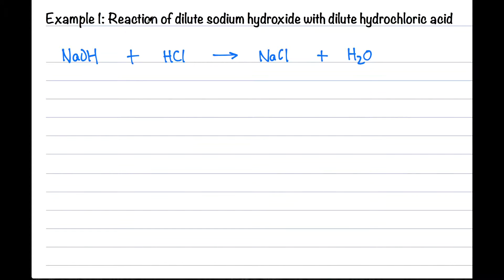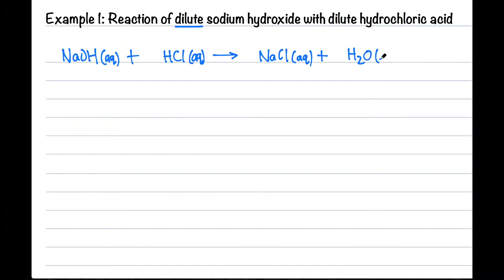We will add state symbols. Note that the term 'dilute' gives us a hint that the solution is an aqueous solution. We also know that the salt formed, sodium chloride, is a soluble salt based on our solubility table, so we will put that as aqueous. For water it is given the state symbol liquid.